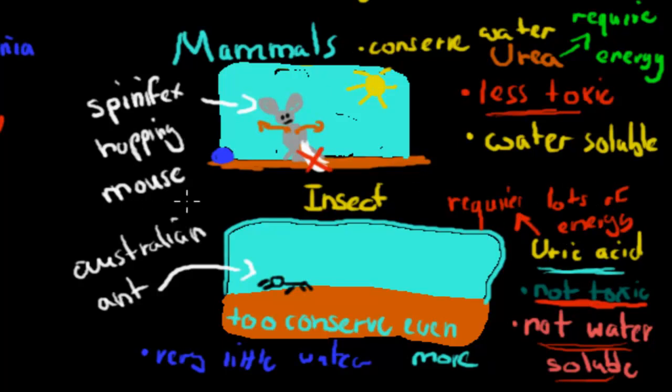A spinifex hopping mouse has to use urea because urea is less toxic than ammonia, and they can't afford to urinate constantly. So they produce urea instead, which they can keep hold of in their bladder for a while and then urinate once or twice a day and still get rid of their somewhat toxic urea. The problem is they do still lose some water because it's water soluble. But they have to have this mechanism, otherwise they wouldn't survive. They wouldn't be able to cope with ammonia, and if they made uric acid it would require more energy. So they prefer using urea instead.